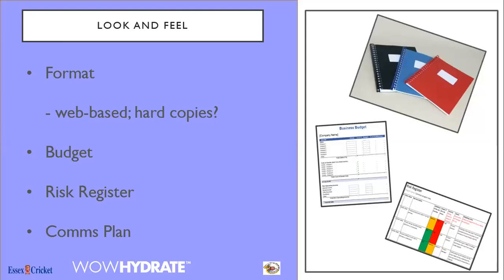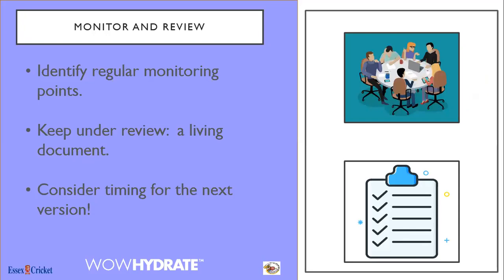Finally, think about the format of your plan — will it be web-based or hard copies? What will it include? Not every plan needs a risk register, but a communications plan can be a very good way of telling people what you're doing and showing the local community that you're welcoming and that you exist. And of course, monitor and review your plan — identify regular monitoring points through your committee, keep it as a living document, don't let it sit on the shelf, and consider timing for the next version.